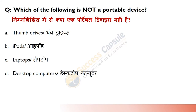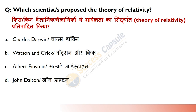Which of the following is not a portable device? Answer: Desktop computers are not portable devices. Portable devices are ones that we can easily carry. Smartphones, tablets, and flash memory are all portable devices. Laptops are portable, but desktop computers are not.